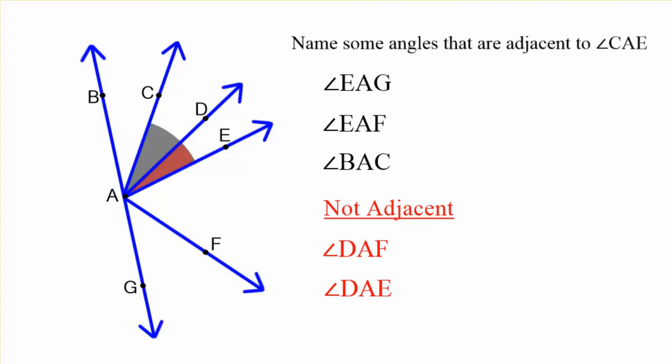So we now know what are adjacent angles and some examples of ones that are not adjacent. That is a very common mistake. So pay attention to the interior as well as the vertices and sides.